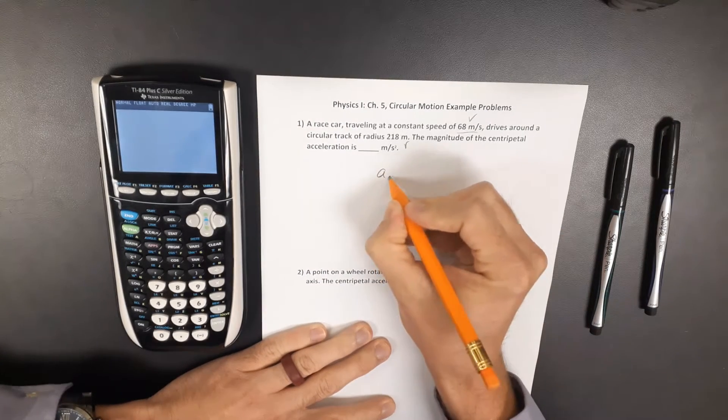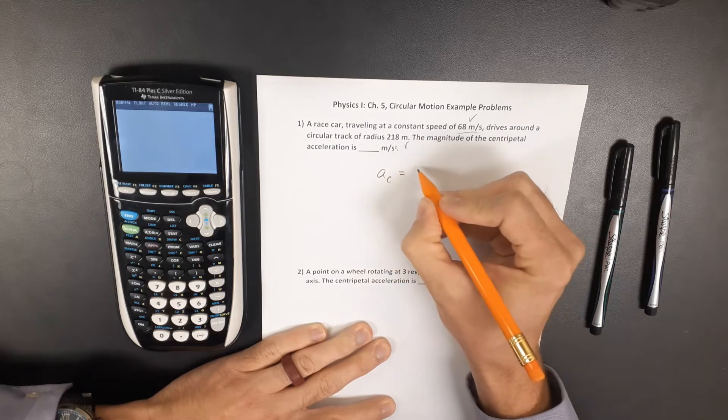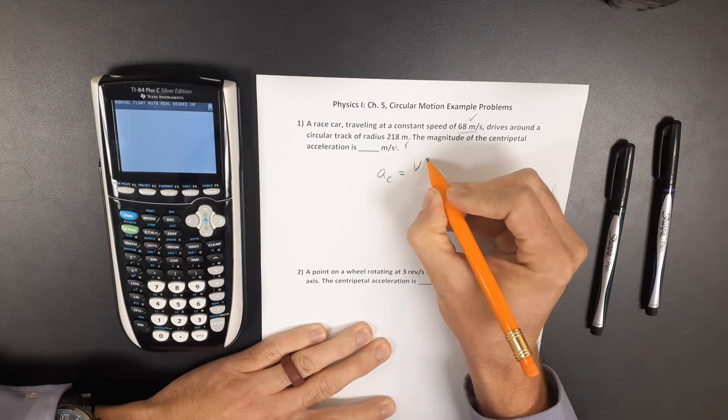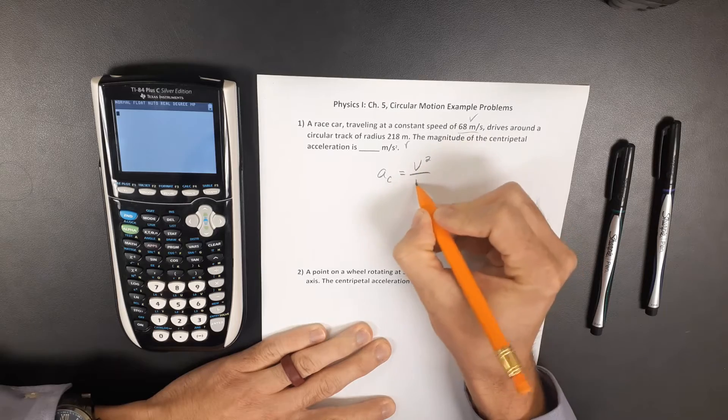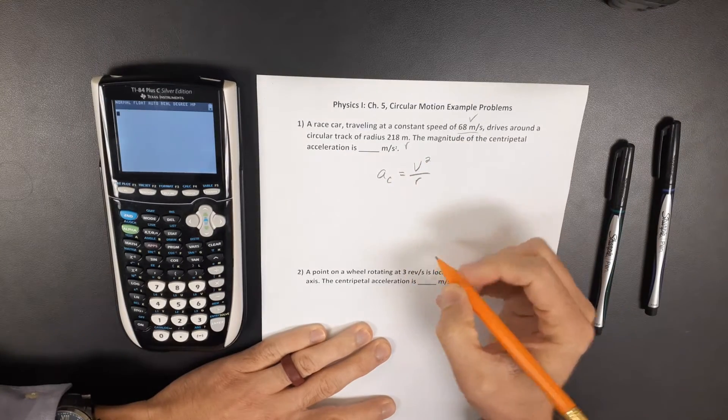So centripetal acceleration, when you have uniform circular motion, centripetal acceleration is speed squared divided by the radius.